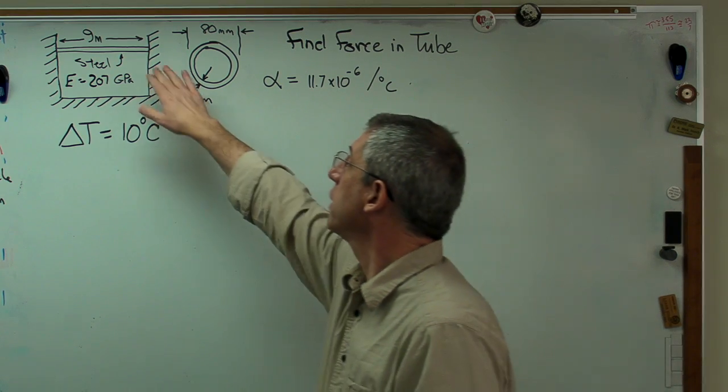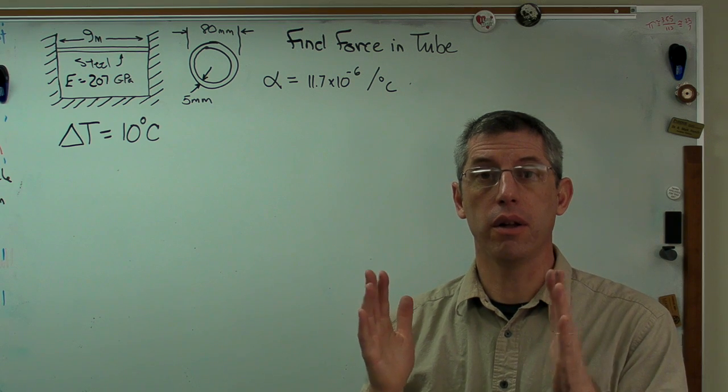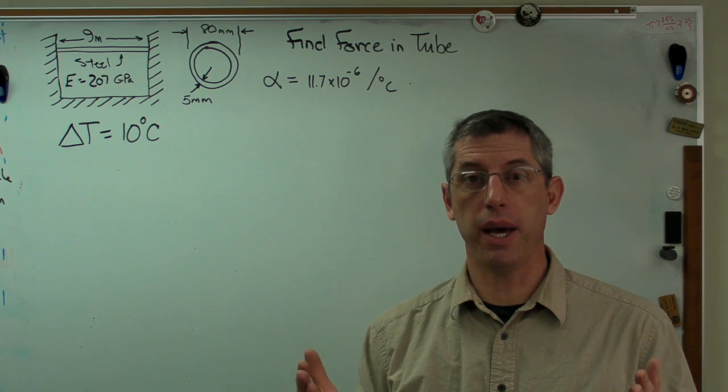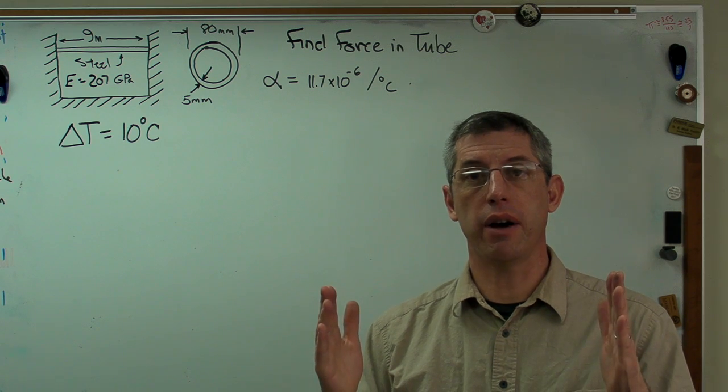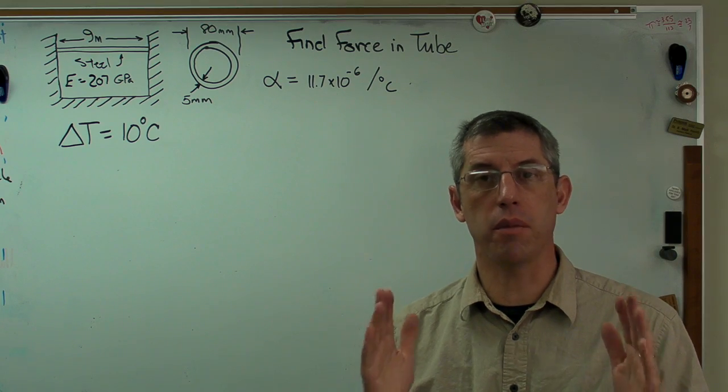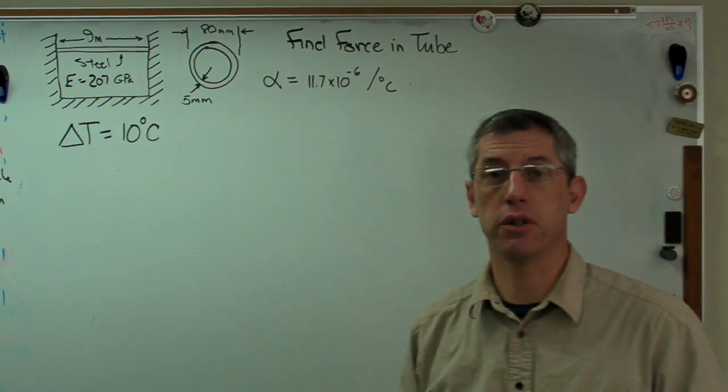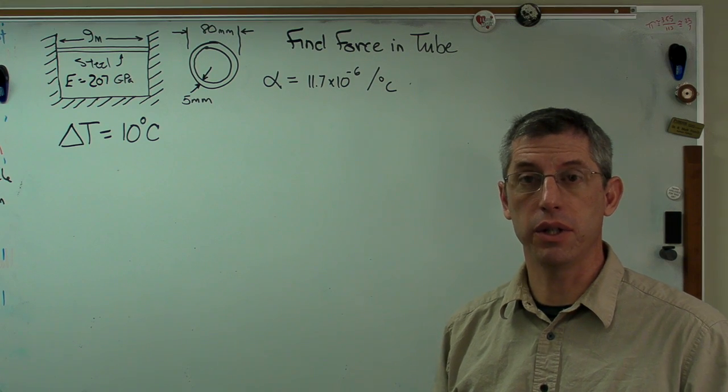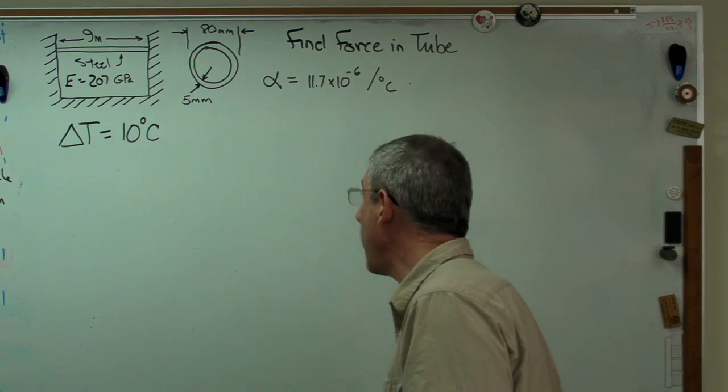So the strategy is we're going to take this bar, pretend there's no restraint on it at all, calculate how far it expands under a temperature change of 10 degrees C, and then find out how much force it would take to compress it back down by that same amount. That's going to be the force that it generates when the ends can't move. So let's do that.